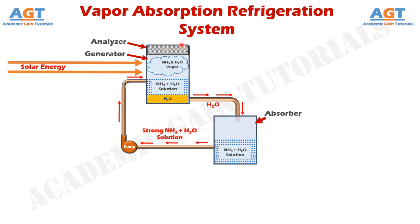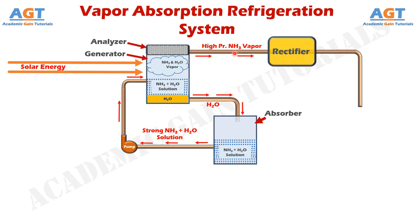Now, even after passing through the analyzer, there will be some proportion of water vapor mixed with this ammonia vapor. So, here we have a rectifier. This rectifier can also be called a separator, because it separates the remaining limited amount of water vapor present inside this ammonia vapor through the exchange of heat. Through the exchange of heat, this rectifier will convert the water vapor into liquid form and separate it from ammonia vapor. Then, this separated liquid water is passed back to the generator, from where it will ultimately reach the absorber.